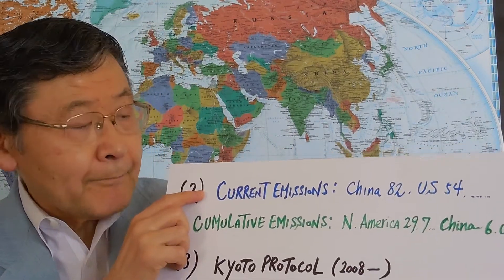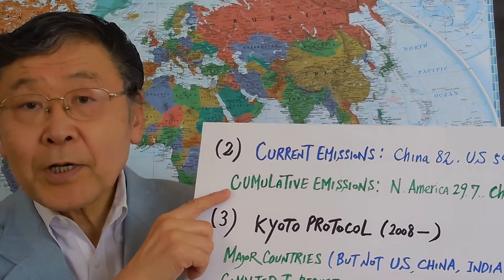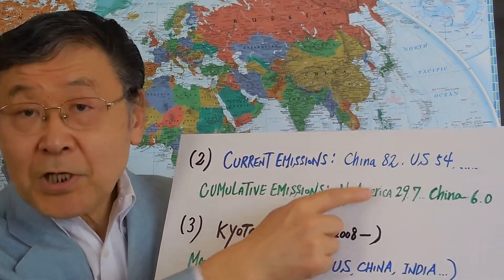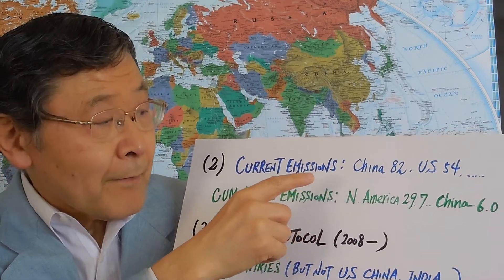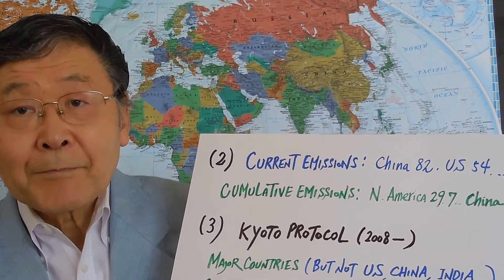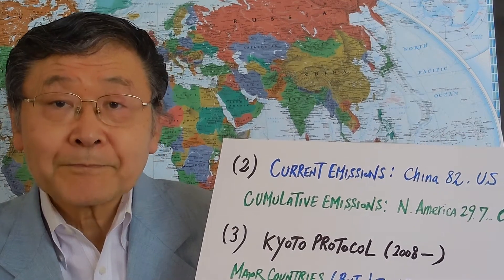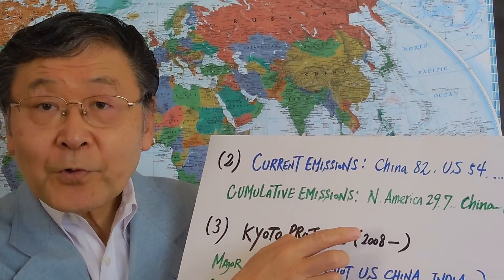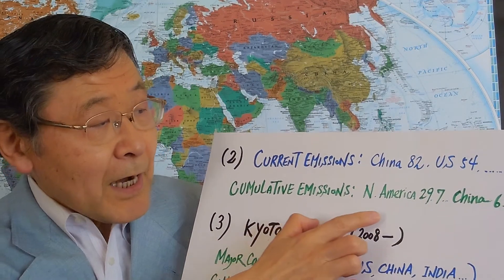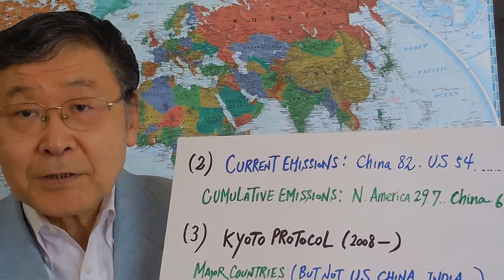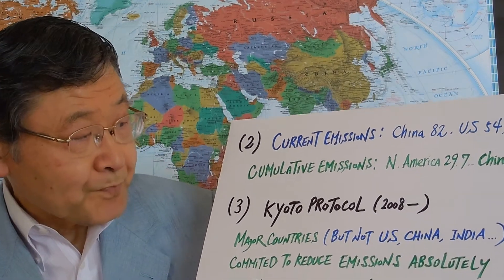The second point is to look at current emissions versus historically cumulative emissions. As we saw, in terms of current emissions China is number one, followed by the United States. But historically, the US and European countries have been using and polluting the air for a long time in the process of industrialization for centuries. Therefore, total accumulated pollutants are very high — around 38 for North America versus only 6 for China, because China only recently started its industrialization.